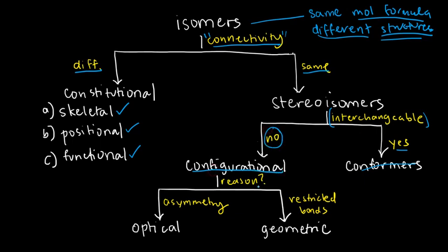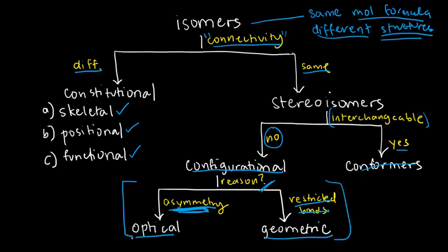If the answer is no, your reason will further classify the type of configurational isomerism. If it's due to a symmetry — which we'll discuss later — we have an optical isomer. But if it's a restricted bond that causes the non-interchangeability, it's geometric. All of these are technical terms we haven't discussed yet, but hopefully when we cover them one by one, it will make sense.